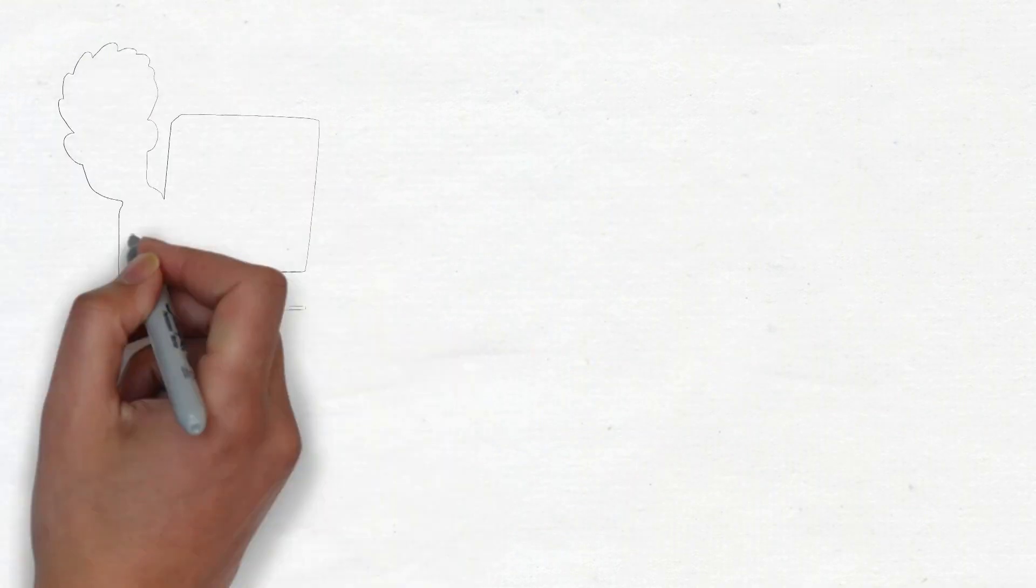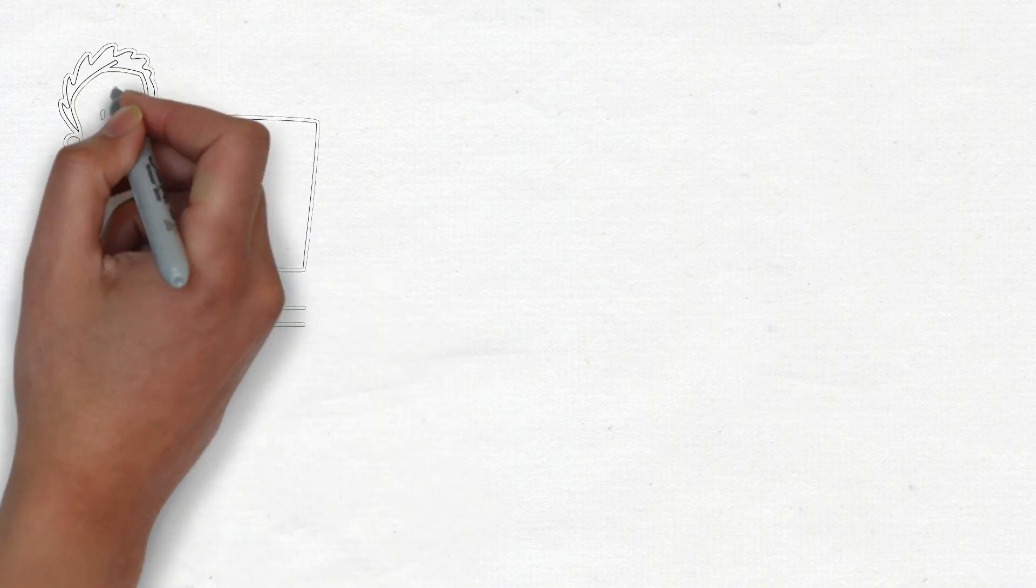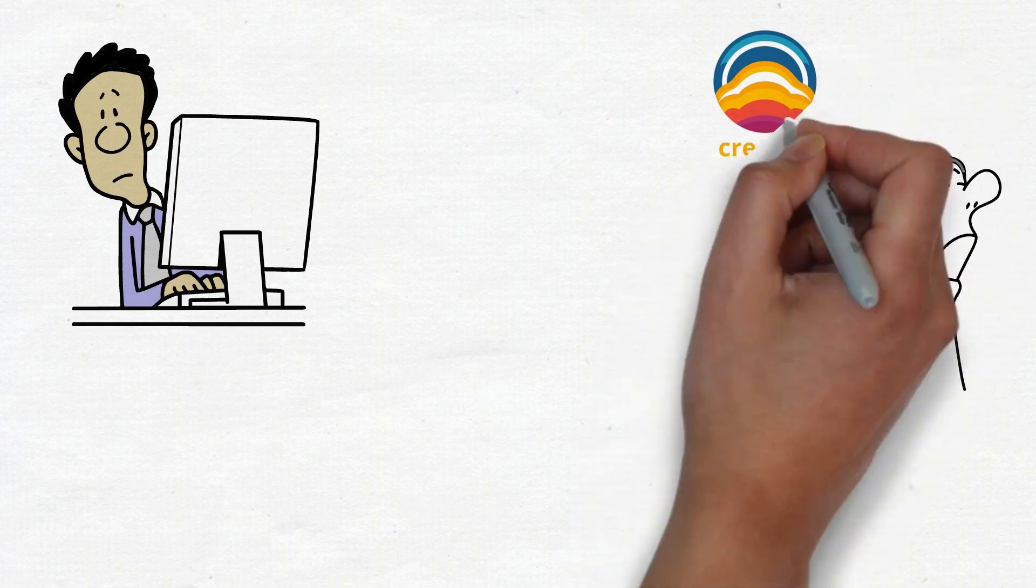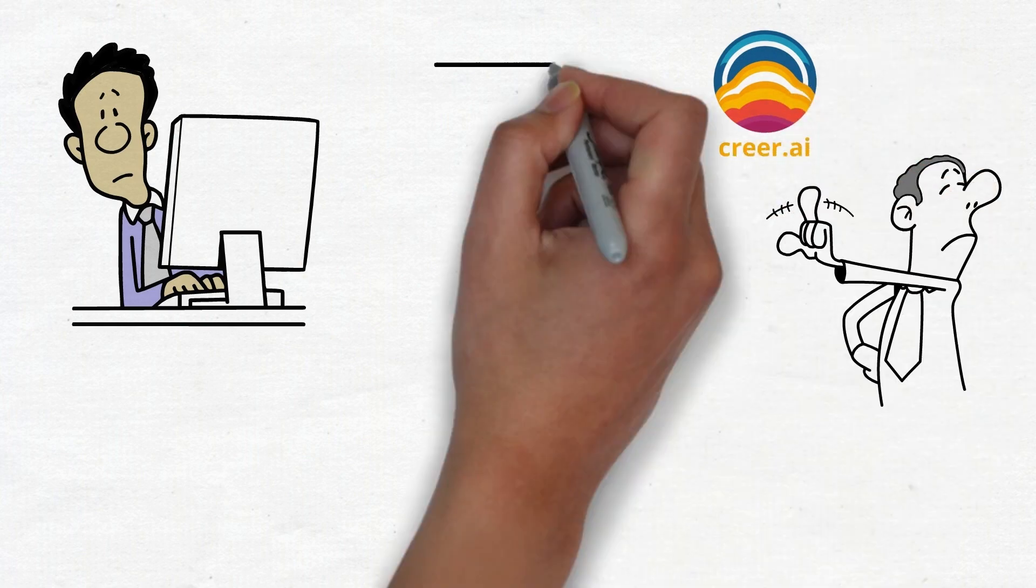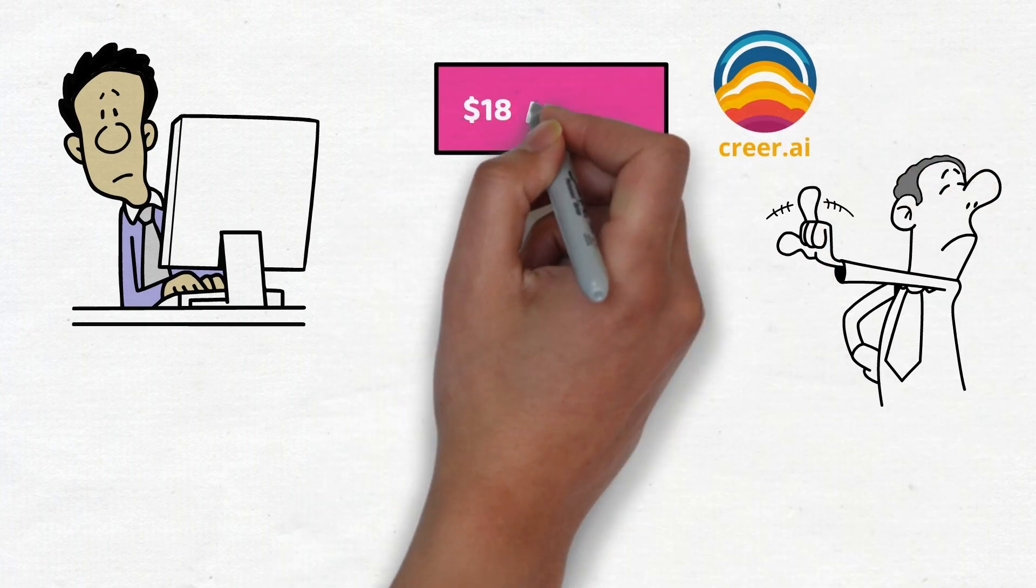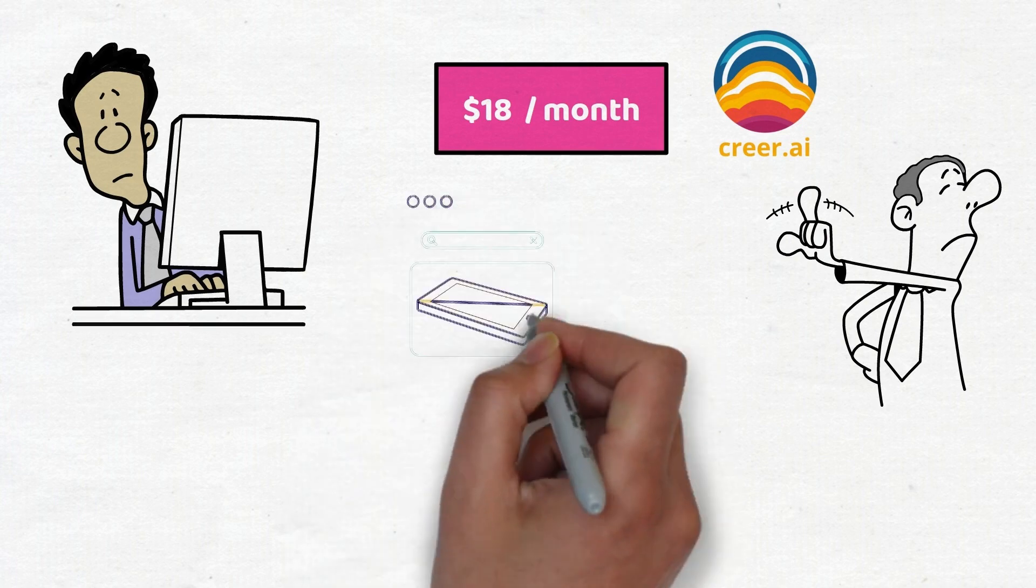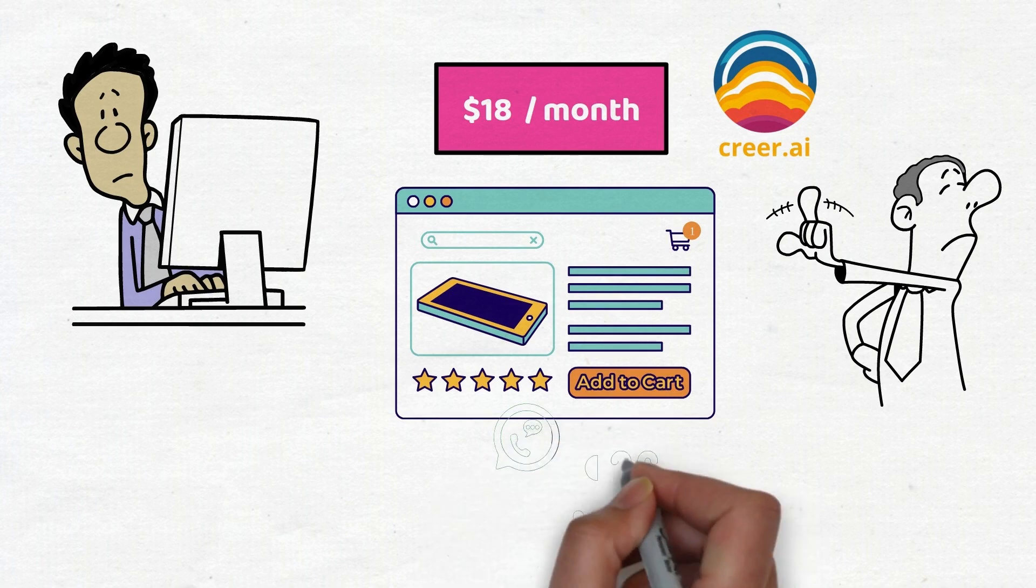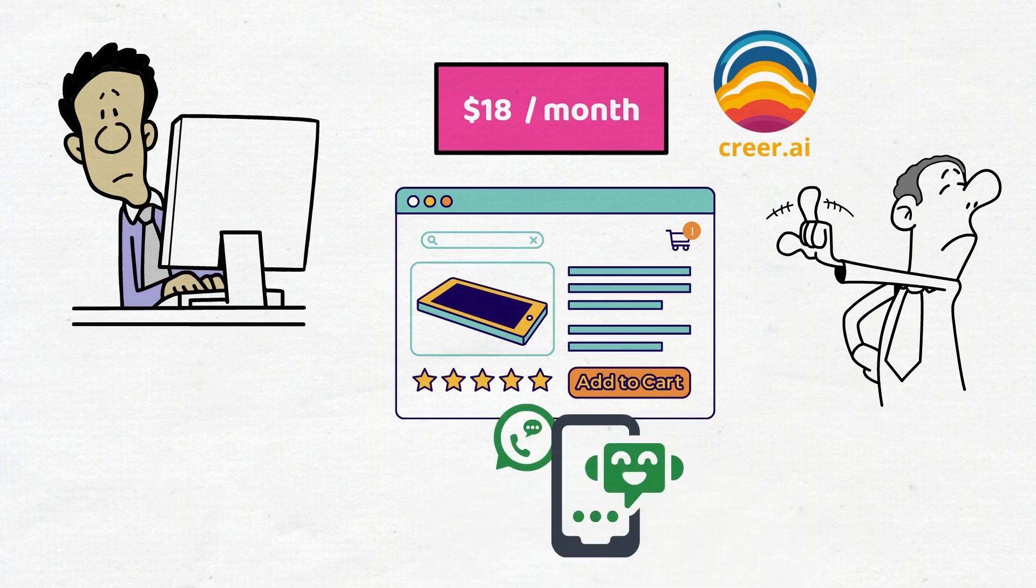You might think setting up an attractive online platform is hard or expensive, but you'd be wrong. Thanks to Kriya.ai, launching your online store is streamlined and affordable. For just $18 a month, not only does Kriya.ai build you a custom, eye-catching website, but they also install an online chat directly connected to your WhatsApp. But there's more.